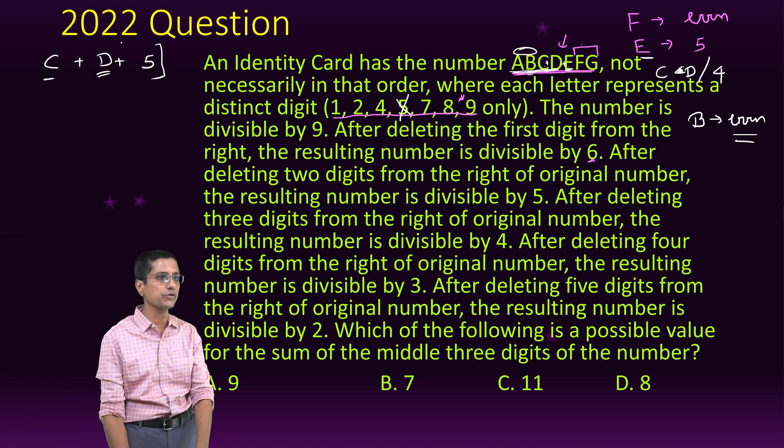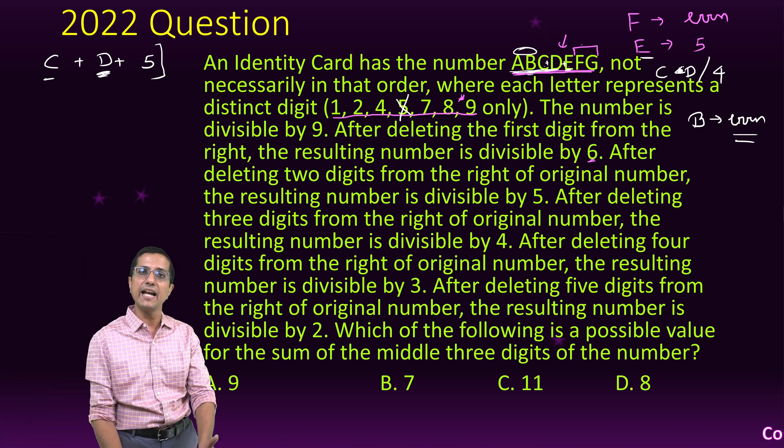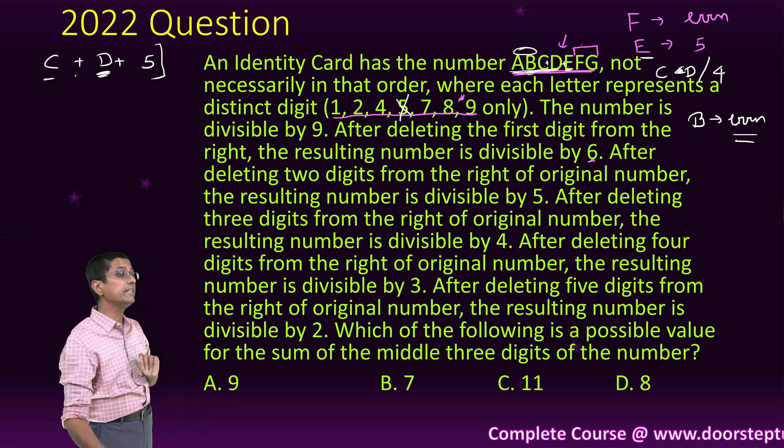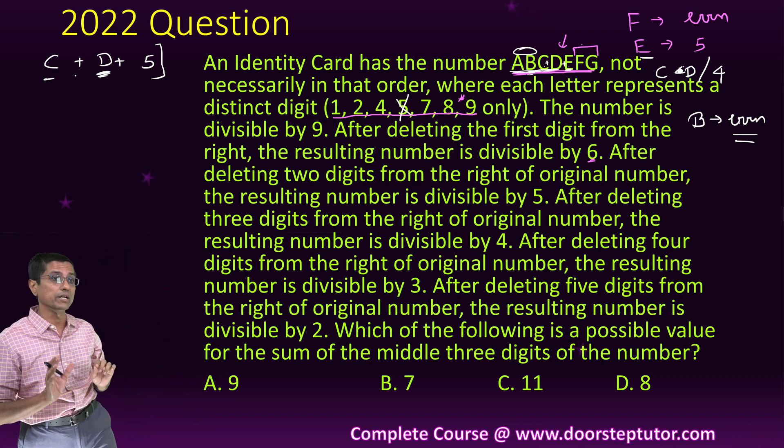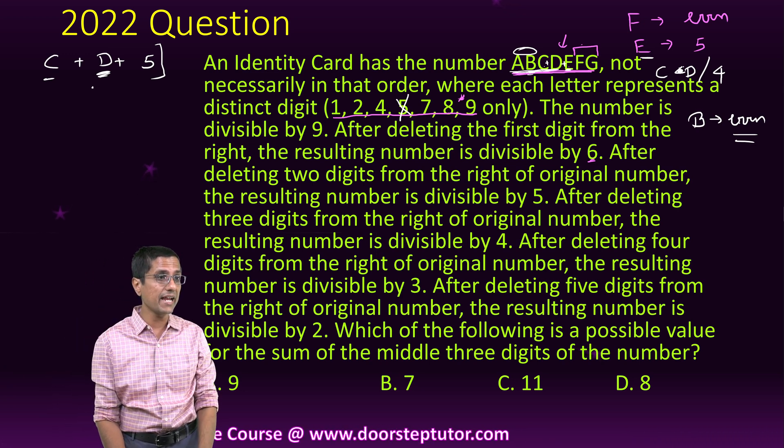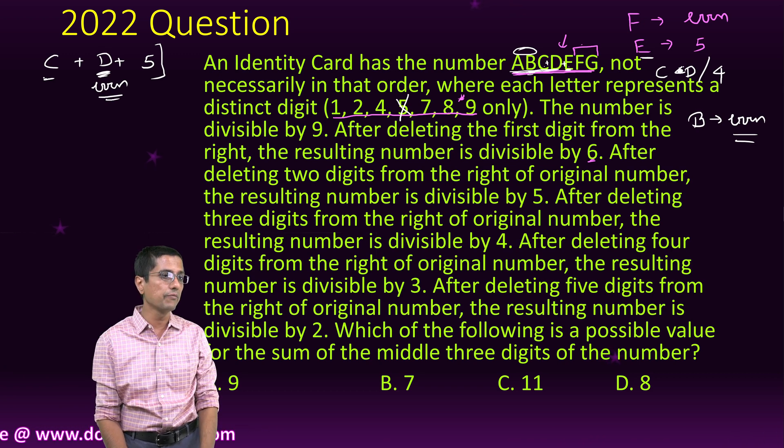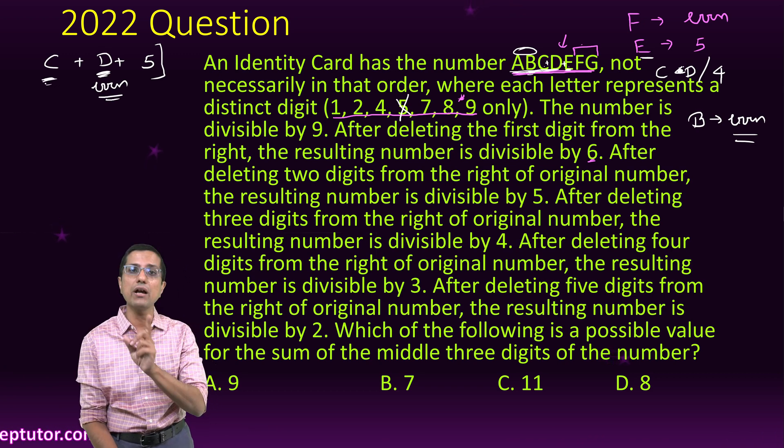When we form CD, we cannot take two even numbers. We have to take at least one even number - that is 100% D has to be even because CD are divisible by 4, but we cannot take all the two even numbers.